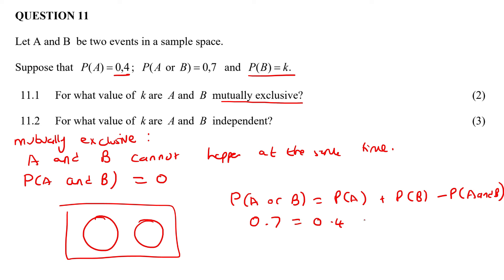We know that this one is 0.4. We know that this one is K. And we know that this one must be zero, because we've just said, if it's mutually exclusive, that part must be zero. And so if you solve for K now, you would get 0.3.